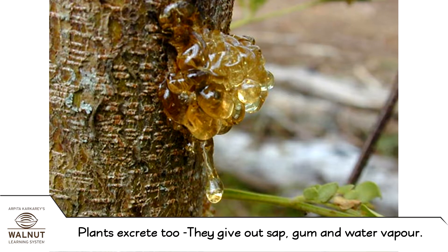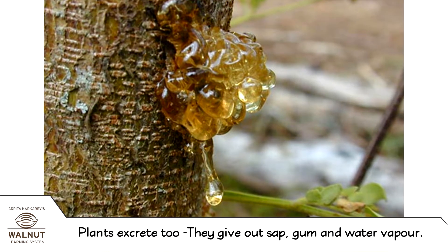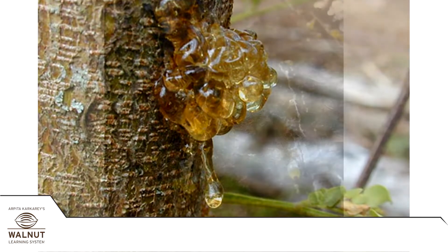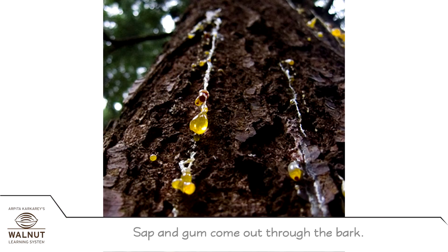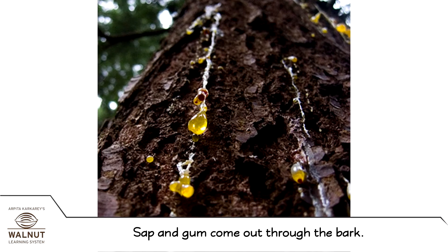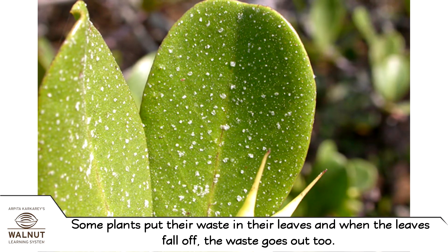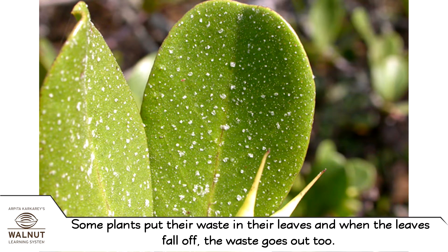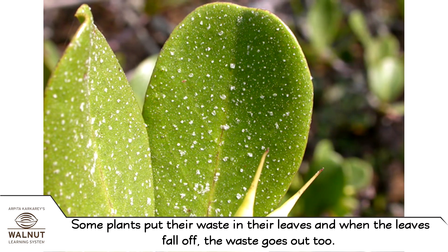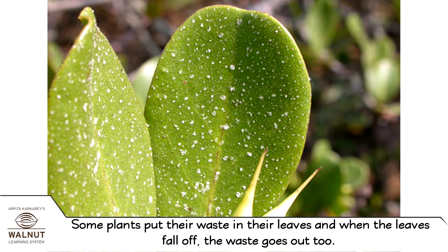Plants excrete too. They give out sap, gum, and water vapour. Sap and gum come out through the bark. Some plants put their waste in their leaves, and when the leaves fall off, the waste goes out too.